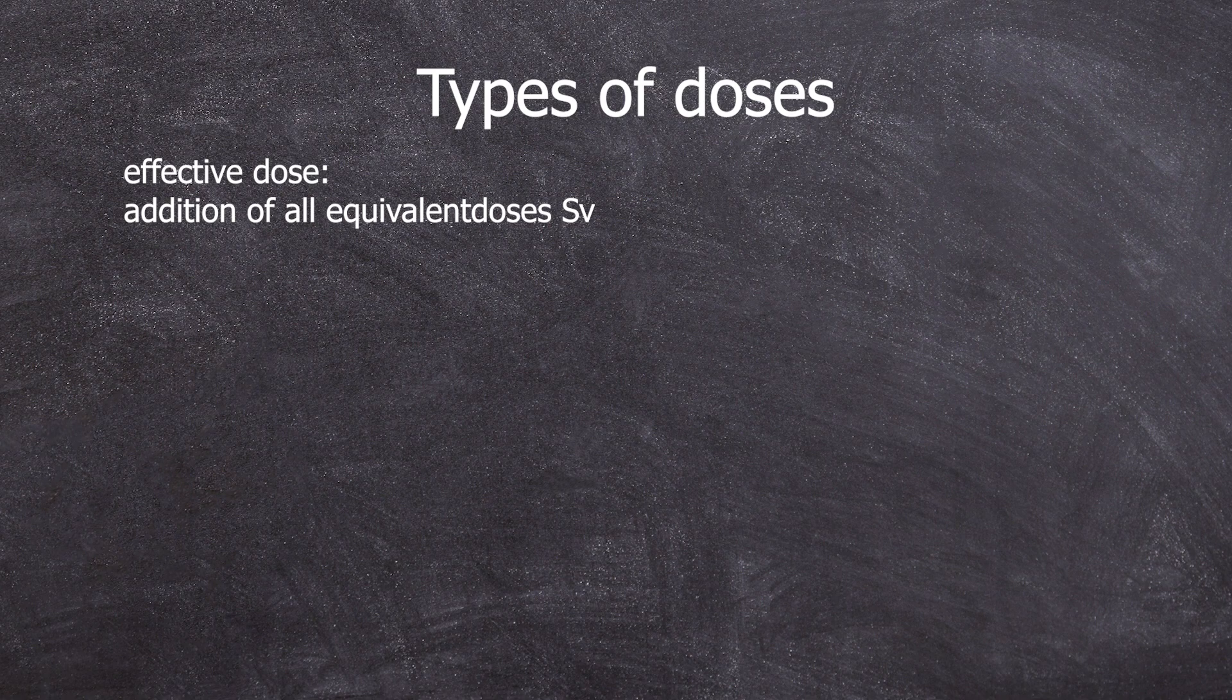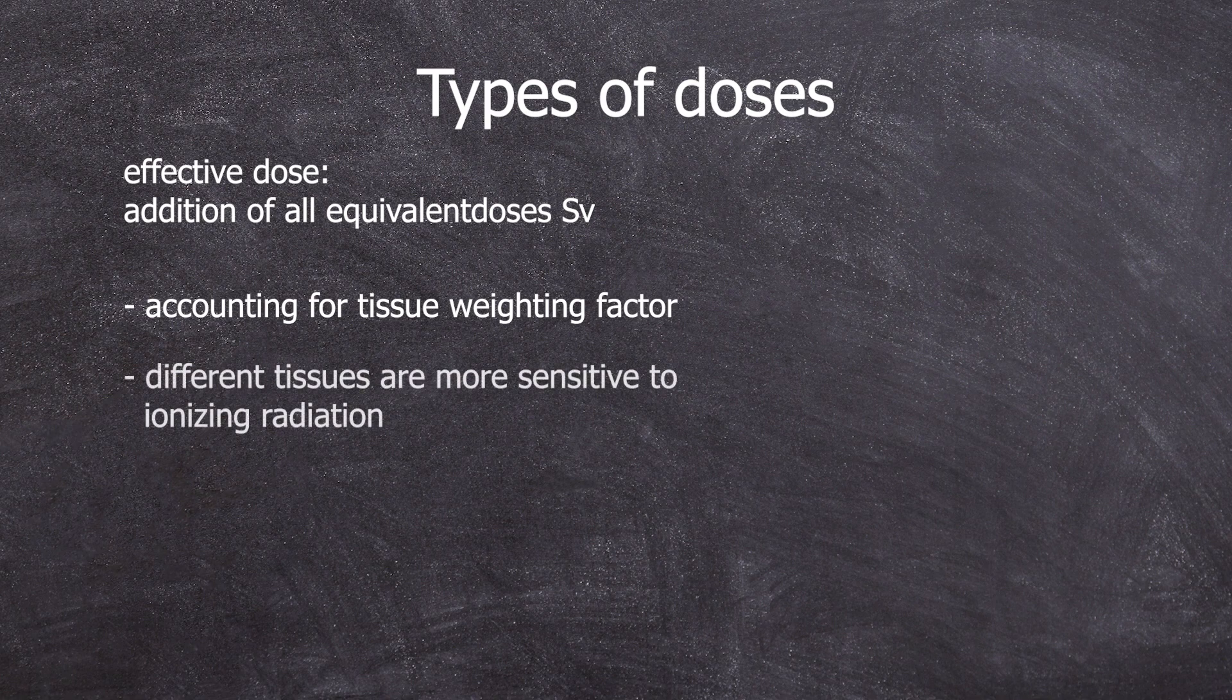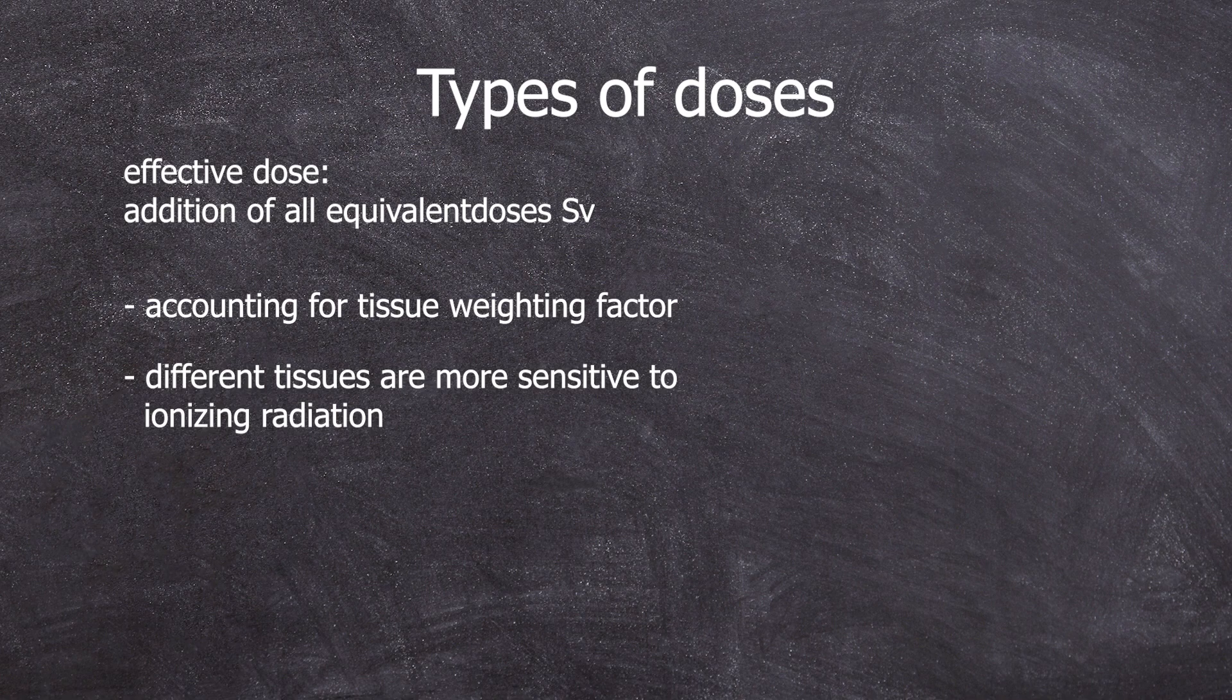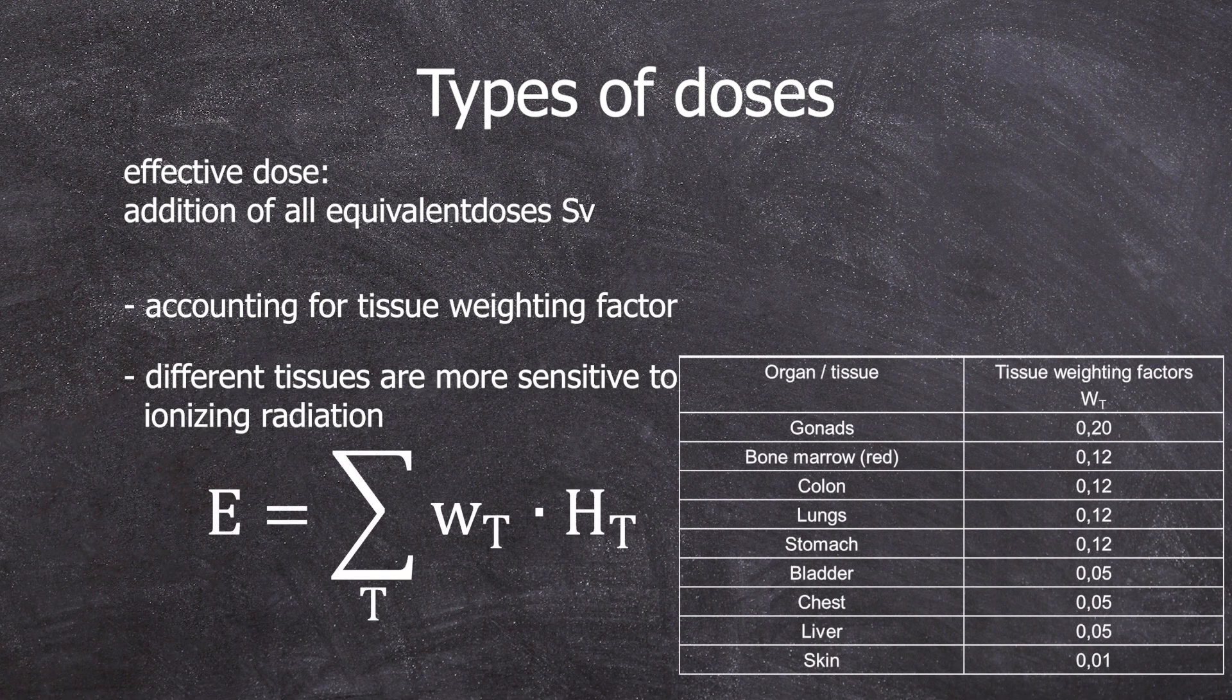Now to calculate the effective dose, a weighting factor for the individual organs is included with the organ equivalent dose. Some organs are more sensitive to ionizing radiation than others. The size of the organ was in practice included in the organ equivalent dose within the organ energy dose. It's calculated as follows.